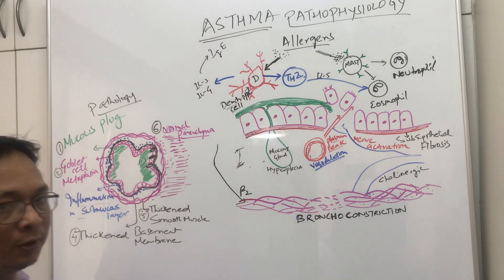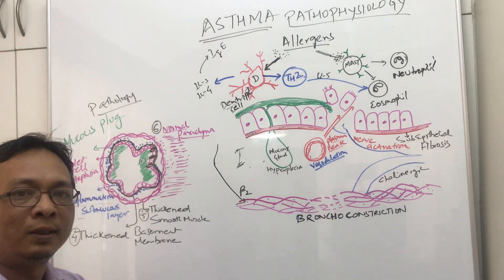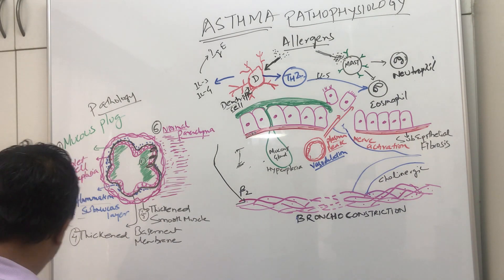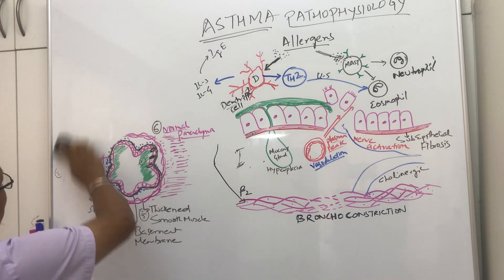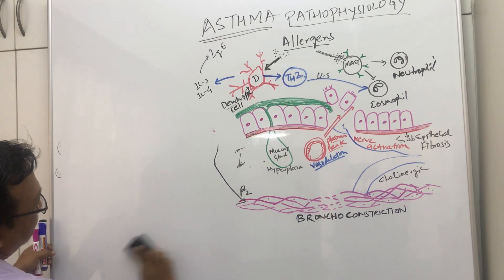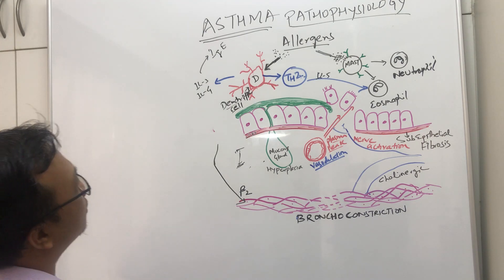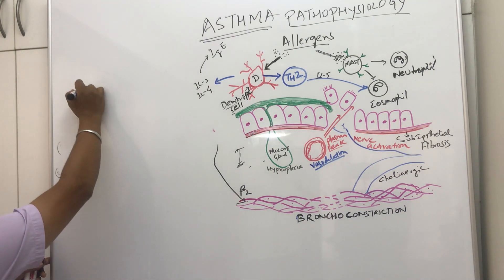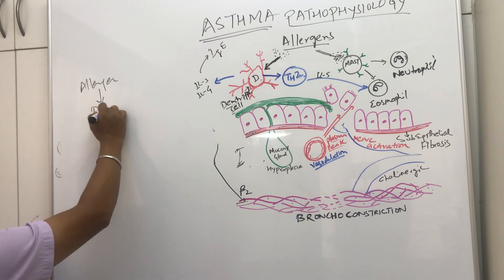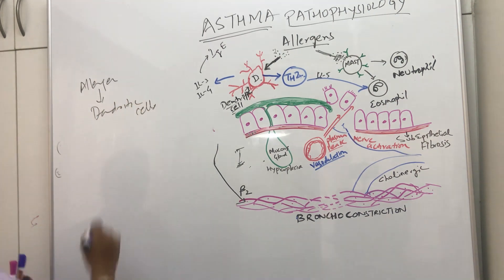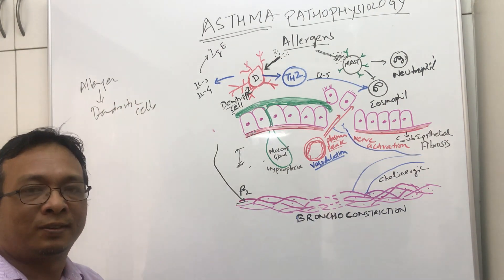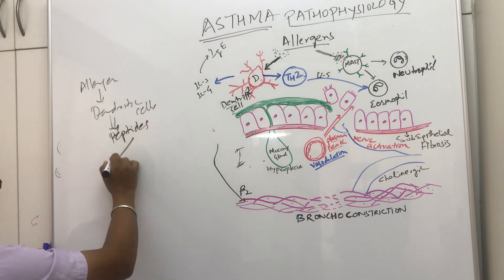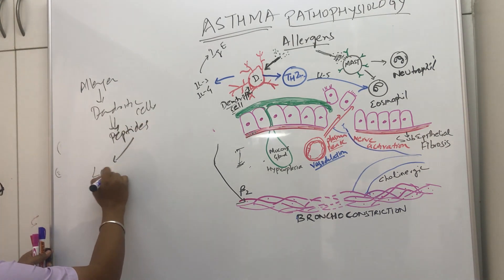Now let's understand the pathophysiology. Let's say someone is going out and is exposed to an allergen for the first time. When an allergen comes for the first time, it will be taken up by dendritic cells. The dendritic cells will process that allergen into peptides, and will take those peptides into the local lymph nodes for processing — this is the antigen-presenting cell function.